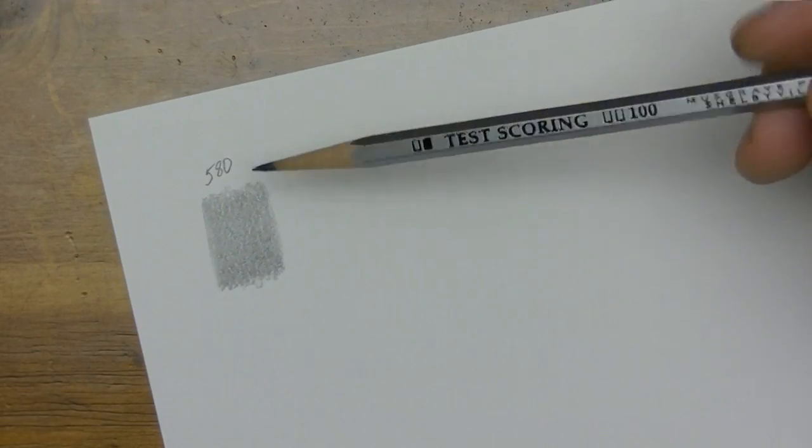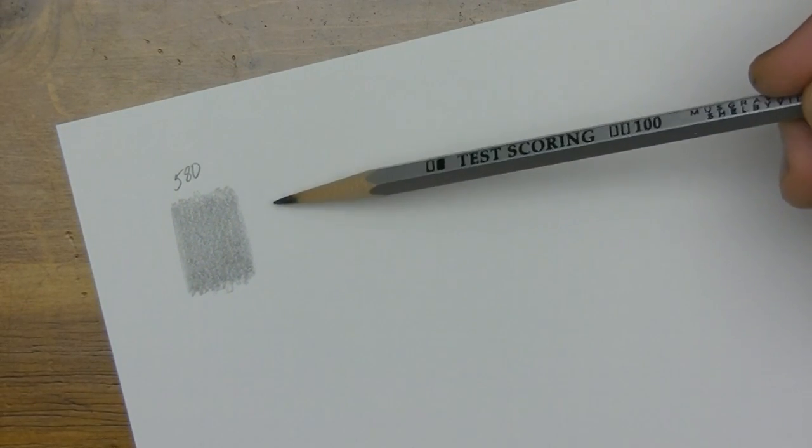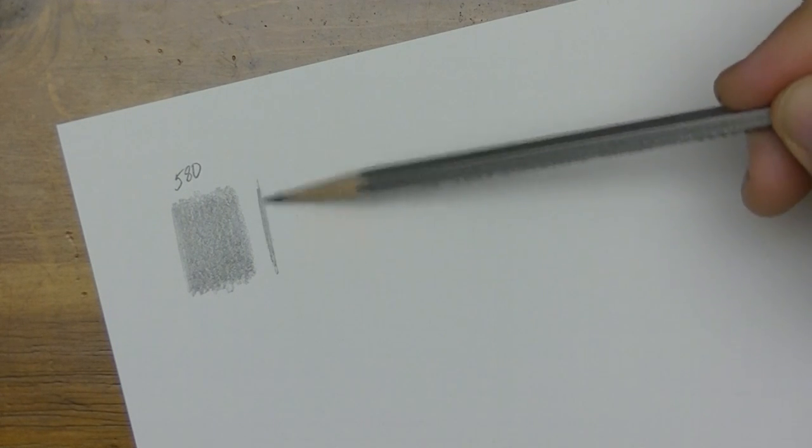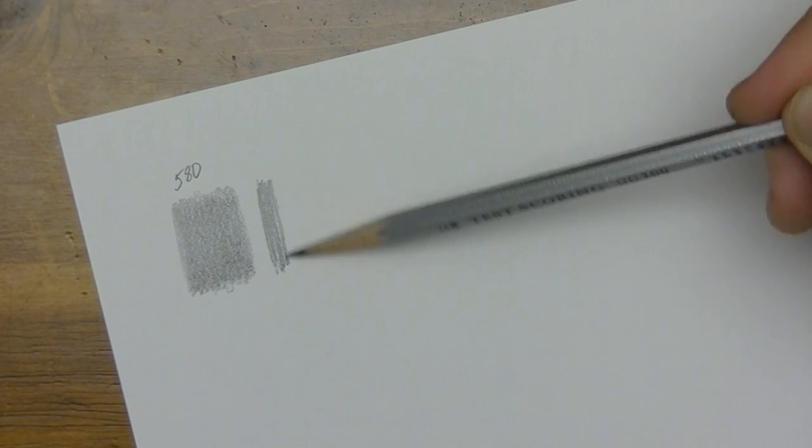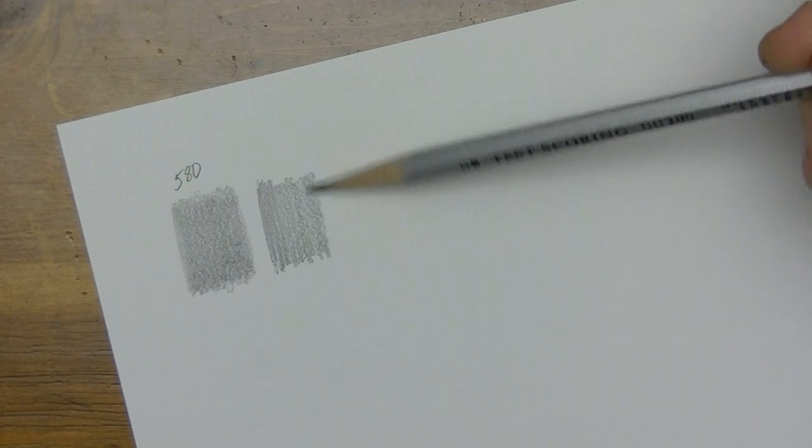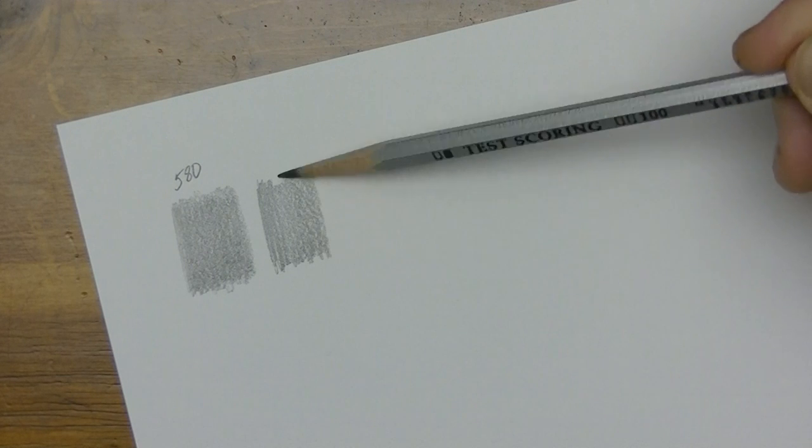Now let's see about the 100 here from Musgrave. How it compares. I think we've already noticed that it was darker. But we'll do it this way anyway. And sure enough. Also smooth, of course.